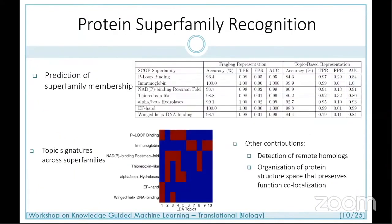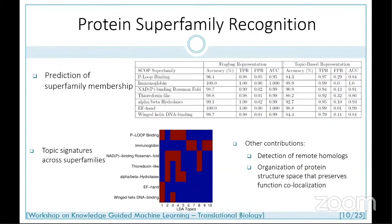We showed that this topic-based representation was informative: it helped us predict superfamilies, even those with very high class imbalance and few known structures. When we dug into what the topics tell us, some were present in only a few superfamilies while others were broader. One challenge is that unlike text mining — where you can look at a distribution of words and say 'this topic captures sports' — in proteins you don't have that lexicon. You have to use other tools to give meaning to topics, such as heat maps showing which topics are more prevalent across which superfamilies.